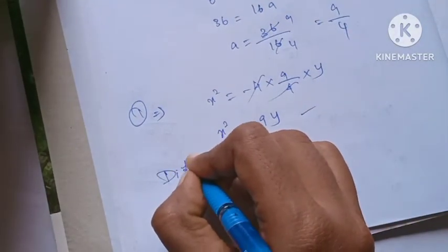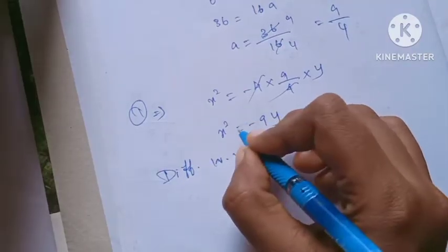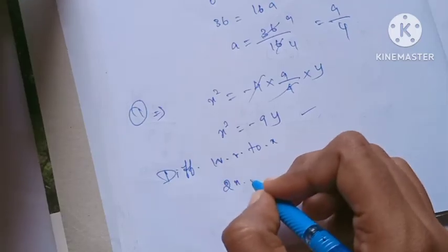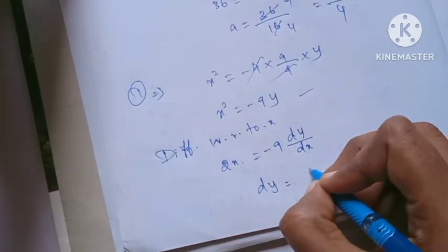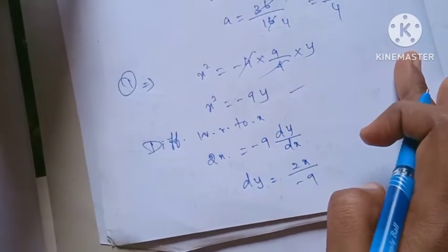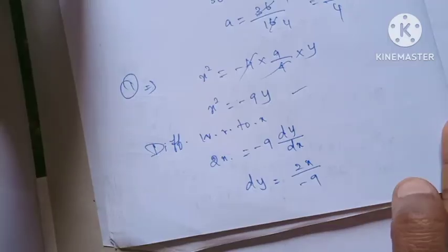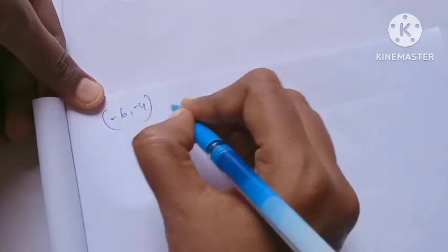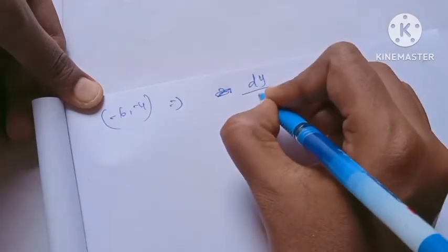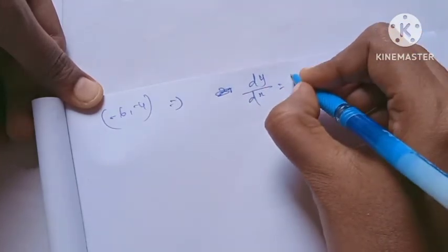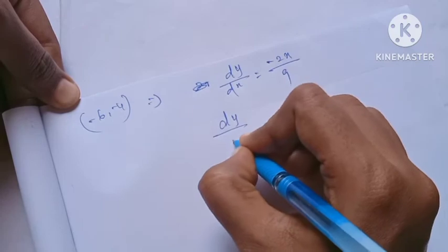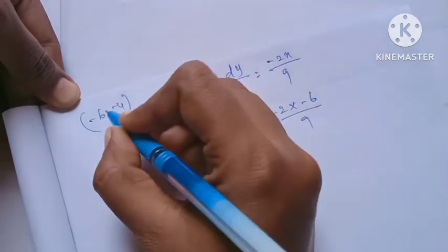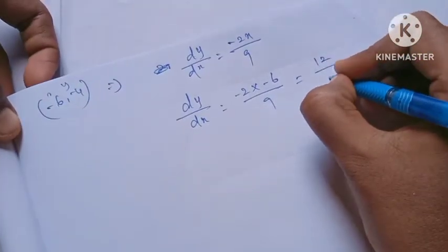Differentiate with respect to x: 2x = -9(dy/dx). So dy/dx = 2x/(-9). Now at the point (-6, -4), dy/dx = -2(-6)/9 = 12/9.